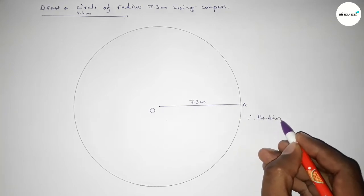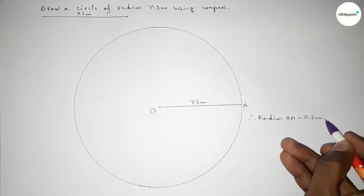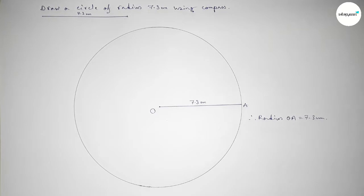OA equals 7.3 centimeters. That's all! Thanks for watching. If this video is helpful to you, please share it with your friends.